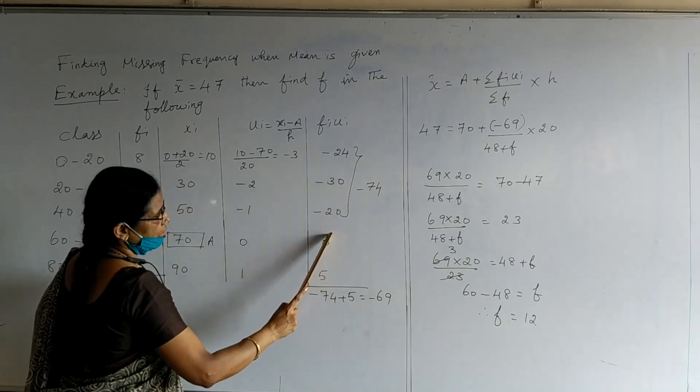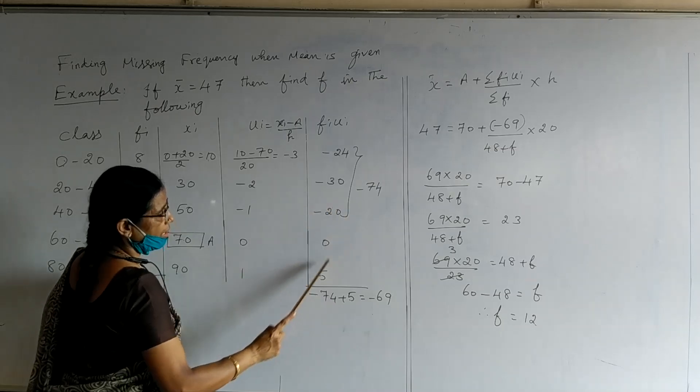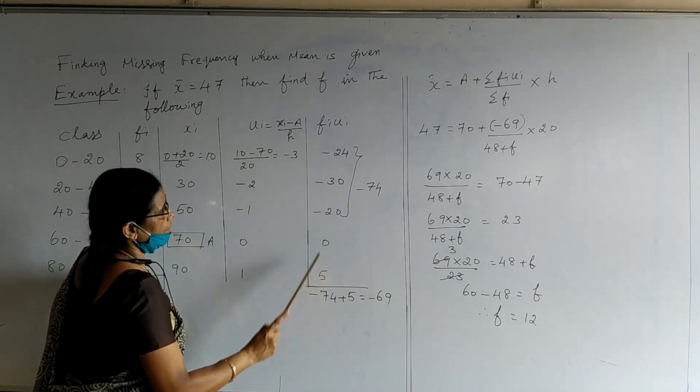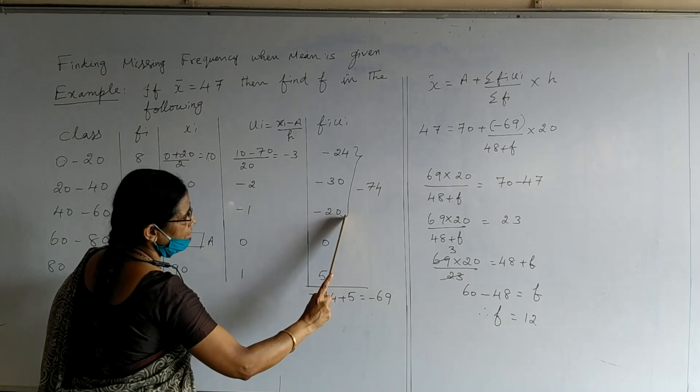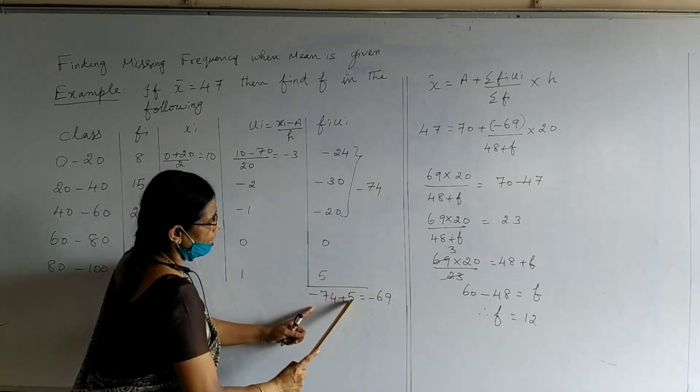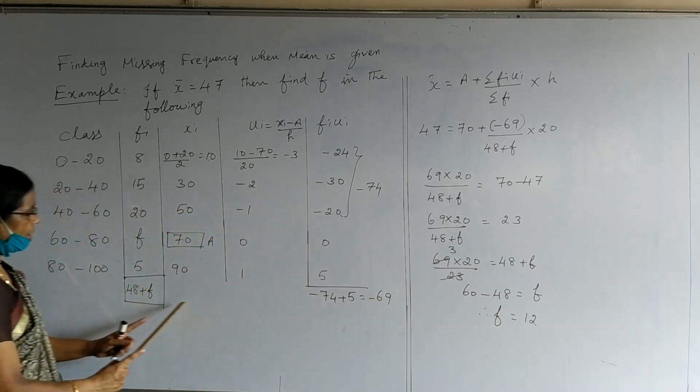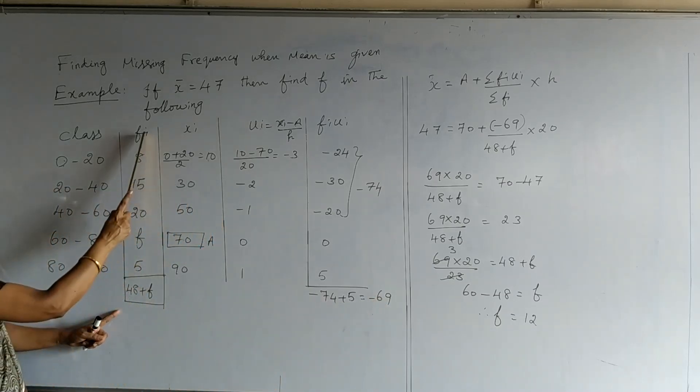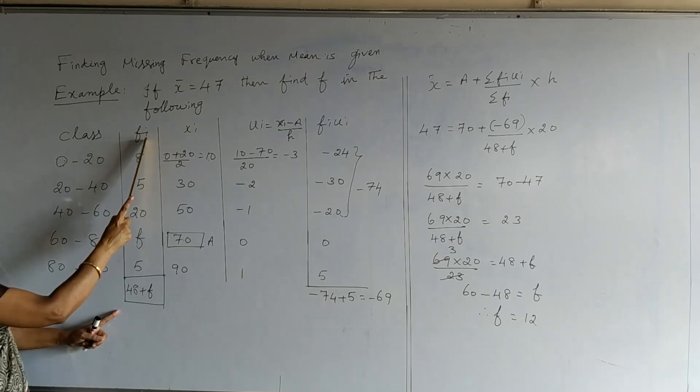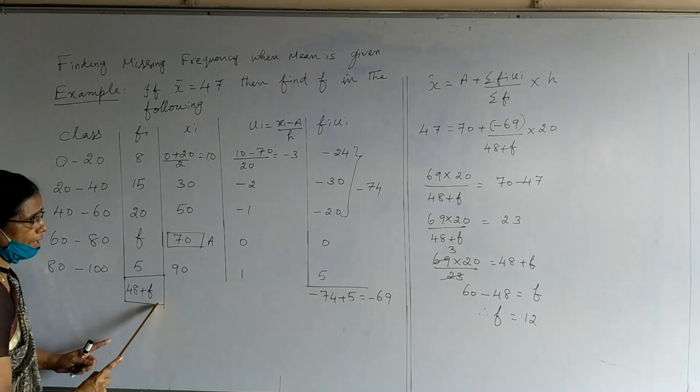While combining this, you can observe minus numbers are there, 0 is there, and positive numbers are there. So here, combining these three negative numbers, we are getting minus 74, plus this 5 gives the total minus 69. We have to find out total of fi, sigma fi. This total gives 48 plus f.